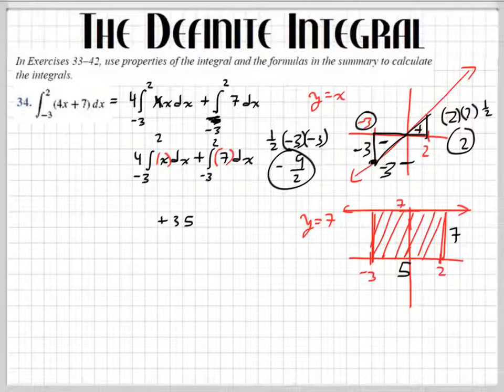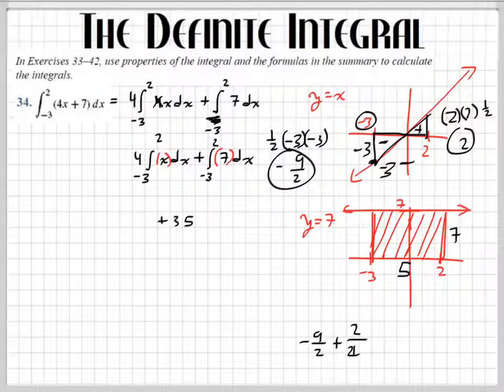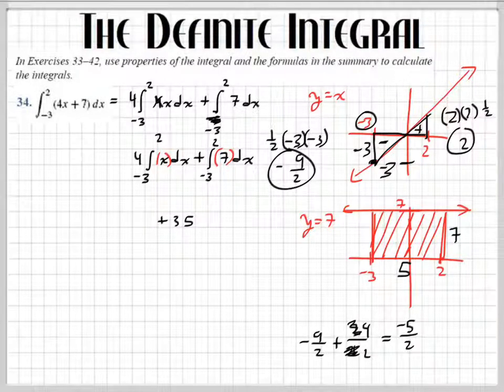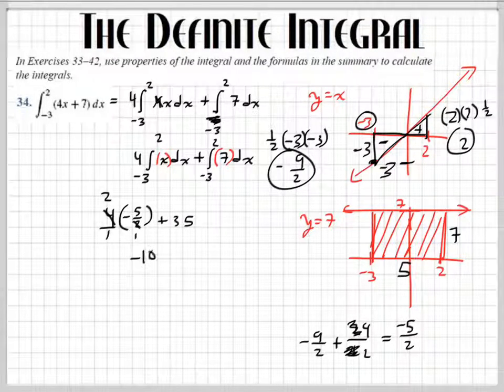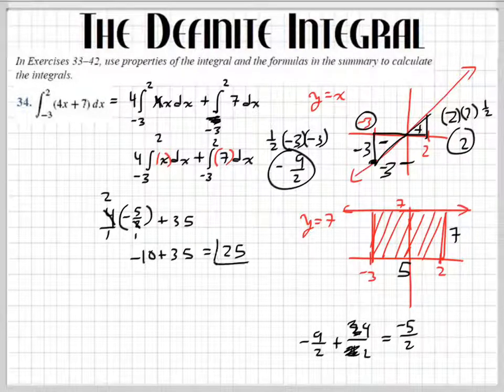So we have negative 9 over 2 and 2. We have to combine those. So negative 9 over 2 plus, let's see, 2 would be over 1. But if we make that over 2, the top would be a 4. And if I add those, I get negative 5 over 2. So I have negative 5 over 2, and don't forget, we have a 4 multiplying to this. So now you just have to simplify this, and you got your answer. So I get, let's see, let's simplify this. This will be 2. That's going to be 1. So I get negative 10 plus 35. That gives me 25. And that's your answer for that one.